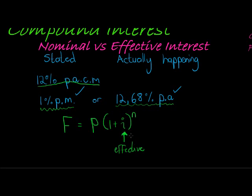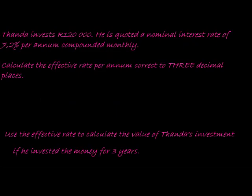Let's have a look at how that works together in an example. Here we are told Thanda invests R120,000. He is quoted a nominal interest rate - you see they quoted a nominal interest rate? That's the stated interest of 7.2% per annum compounded monthly.